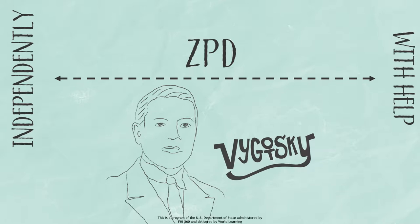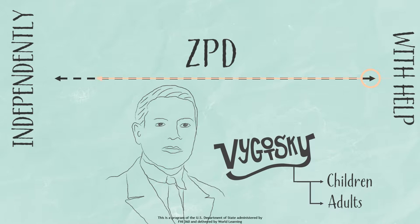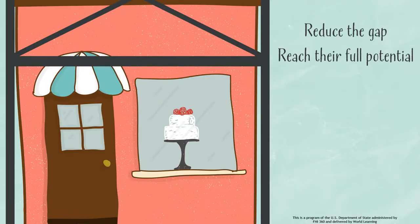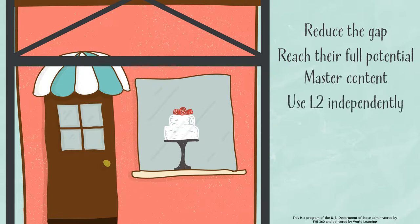While Vygotsky's work focused on children, extensive research has supported this model of learning for adult learners as well. After accomplishing a task with the help of another, a learner is then able to do the task more independently the next time.